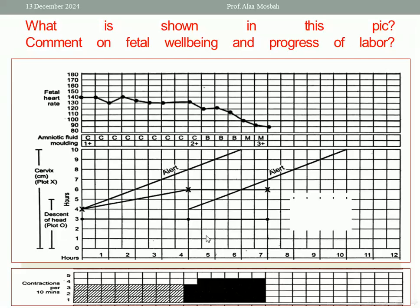So there is a problem here — possibly cephalopelvic disproportion or obstructed labor — together associated with fetal bradycardia, bloody amniotic fluid becoming meconium stained, denoting fetal distress, and also associated with third-degree molding. So all these parameters say I should take action: I should perform an emergency cesarean section. This is my comment on fetal well-being and the progress of labor in this partogram.